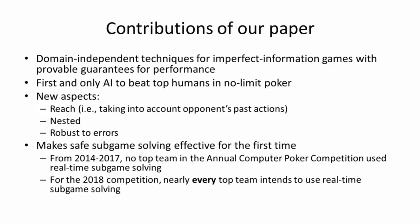So to summarize, the contributions of this paper is that we developed domain-independent techniques for imperfect information games with provable guarantees on performance and exploitability. This has led to the first and only AI to beat top humans in no-limit poker. And we introduced new aspects to safe sub-game solving that allow this achievement, such as considering previous actions that the opponent could have taken and doing nested sub-game solving, responding to off-tree actions. There are also techniques in the paper for being robust to errors in the model, which I don't have time to go into.